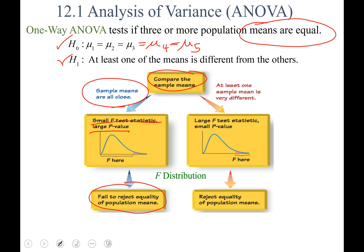The other case will be if you start by comparing your sample means and you find that at least one sample mean is very different from the others. That leads us to a large F test statistic, which leads us to a small p-value, which you can see in the graph there. And that would lead us to conclude rejecting equality of the population means.